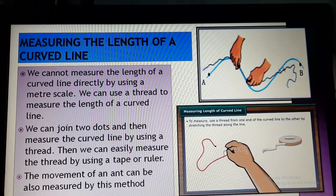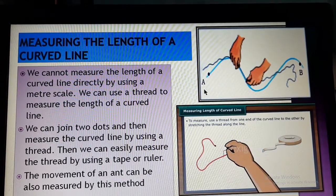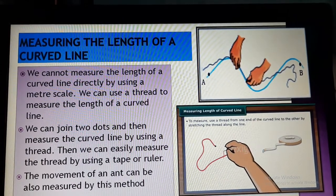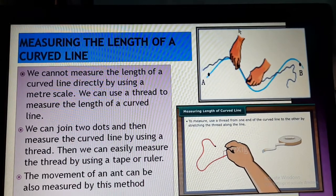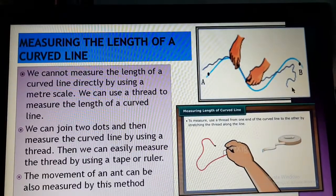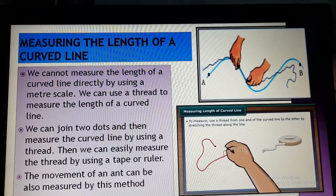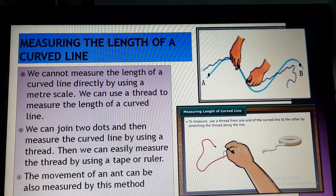See, this is that piece of thread. Now, this piece of thread is measured by the help of either measuring tape or you can take a ruler. First you are measuring the curved line by the help of a thread. Then that thread you are measuring with the help of a ruler or any other instrument which we use to measure length.